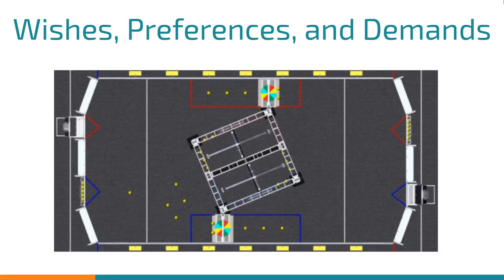As usual, the first thing we did was create a wish-preferred-demand list. The first place we looked at was the ground. Obviously, the ground was a demand because without being able to intake from the ground, the robot would not be able to play.